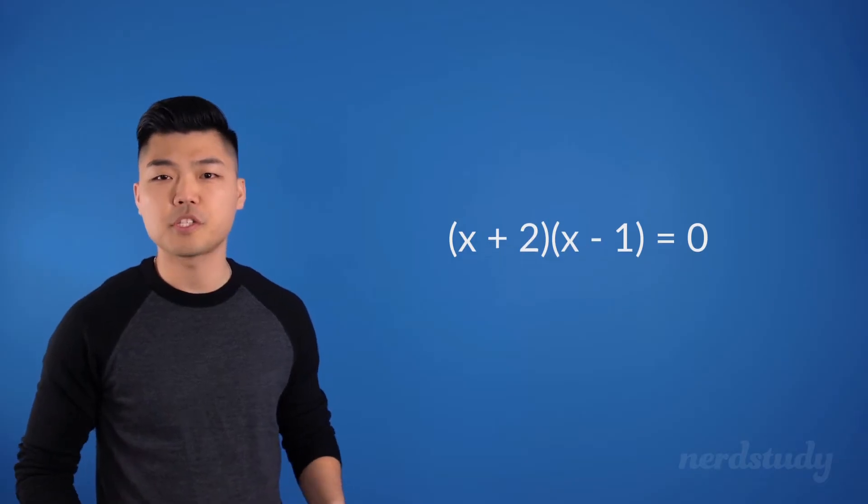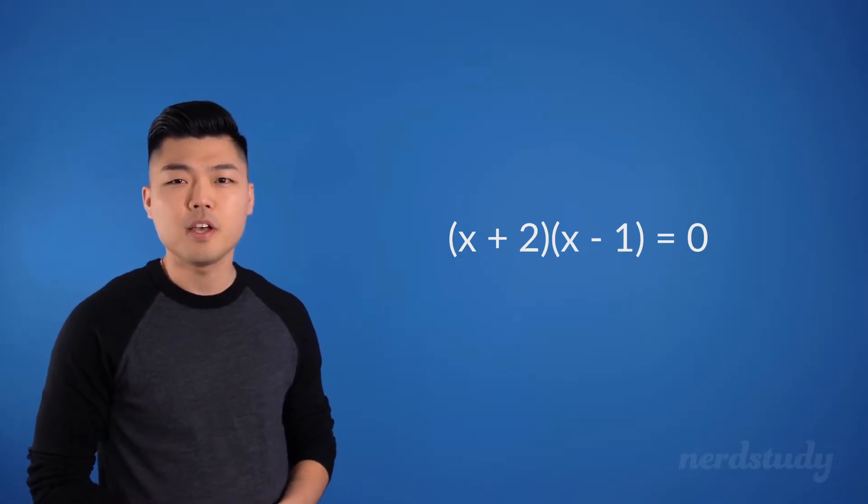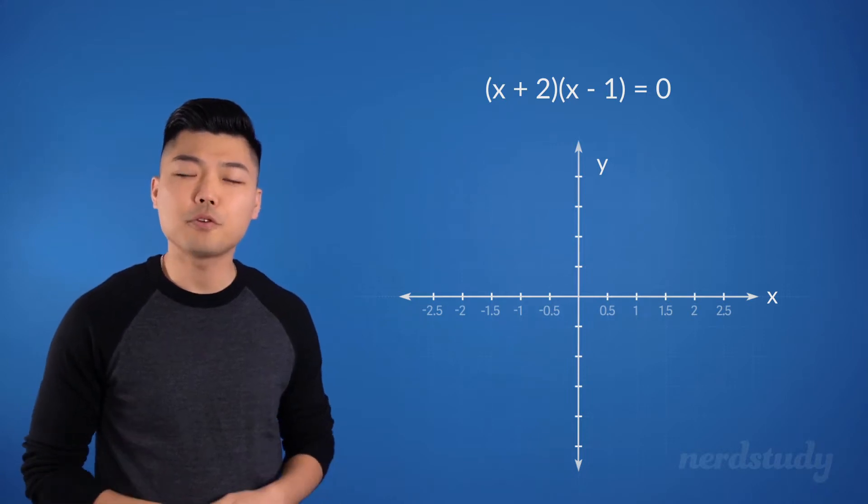Let's say you have an equation like this, where two roots, or shall I say, zeros, exist, given to you as the factored form. If I asked you to graph the equation by a quick sketch, how would you go about doing this?